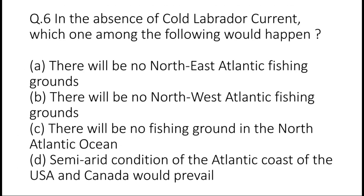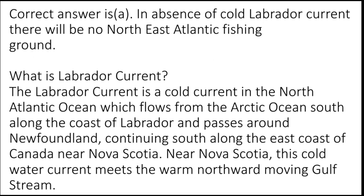Question 6: In the absence of the cold Labrador current, which one among the following would happen? Options are A: there will be no northeast Atlantic fishing grounds, B: there will be no northwest Atlantic fishing grounds, C: there will be no fishing ground in the north Atlantic ocean, or D: semi-arid conditions of the Atlantic coast of the USA and Canada would prevail. The correct answer is A. The Labrador current is a cold current in the north Atlantic ocean which flows from the Arctic ocean south along the coast of Labrador and passes around Newfoundland, continuing south along the east coast of Canada near Nova Scotia, where it meets the warm northward moving Gulf Stream.